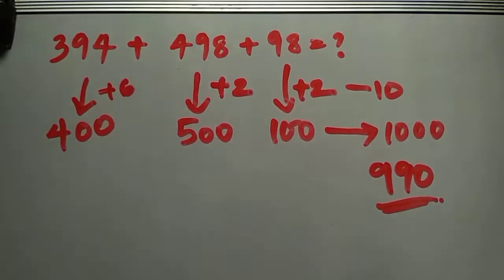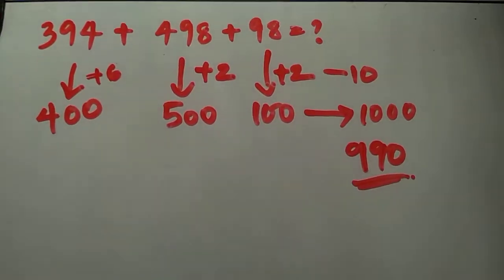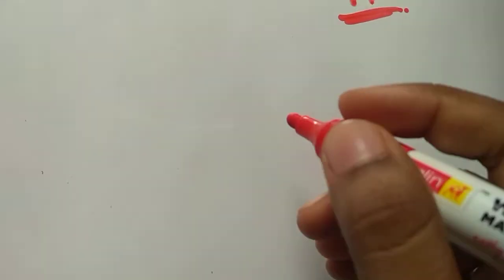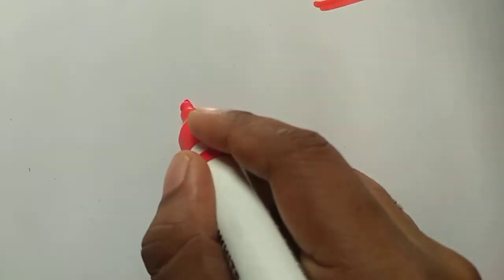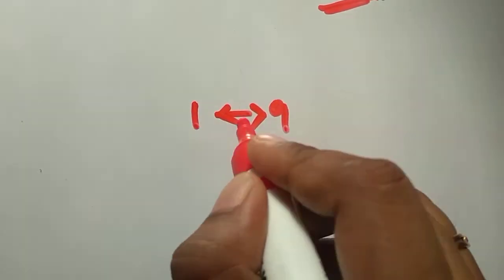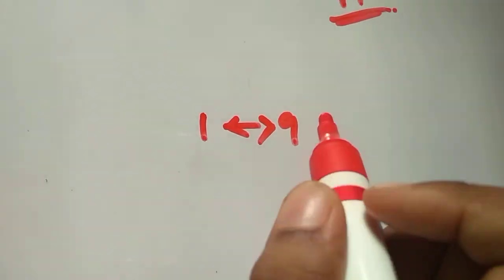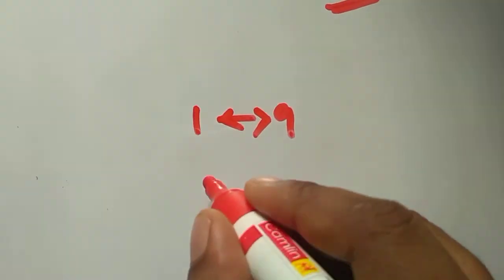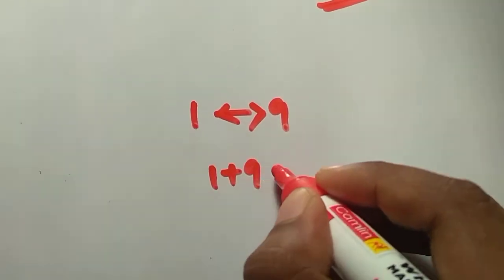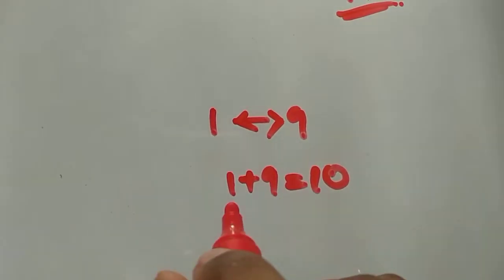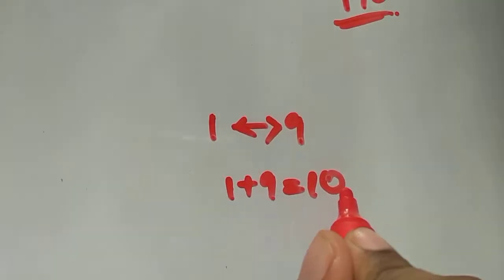Hope you understood this logic. Let me move on to the next one: complements. Complements are numbers like 1 and 9 — 1 and 9 are complements with respect to each other with respect to 10, because 1 plus 9 gives you 10.